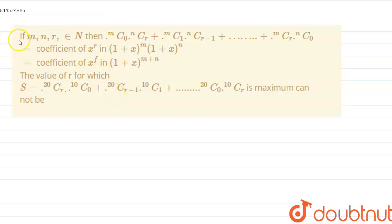Hello guys, today our question is: if m, n, r belong to natural numbers, then mC0·nCr + mC1·nC(r-1) + ... + mCr·nC0 equals the coefficient of x^r in (1+x)^m·(1+x)^n